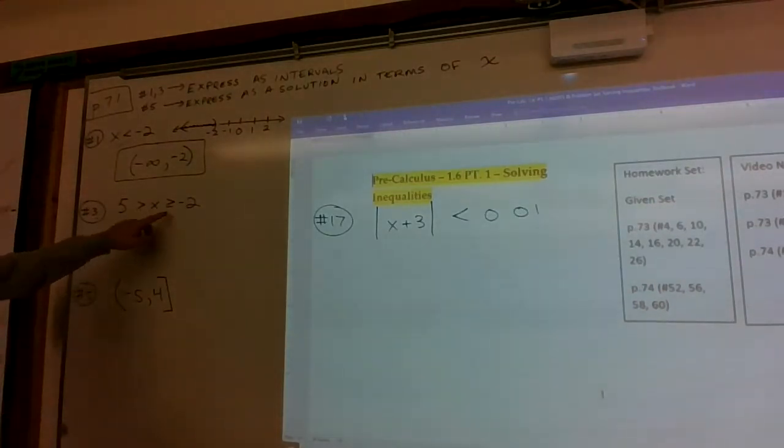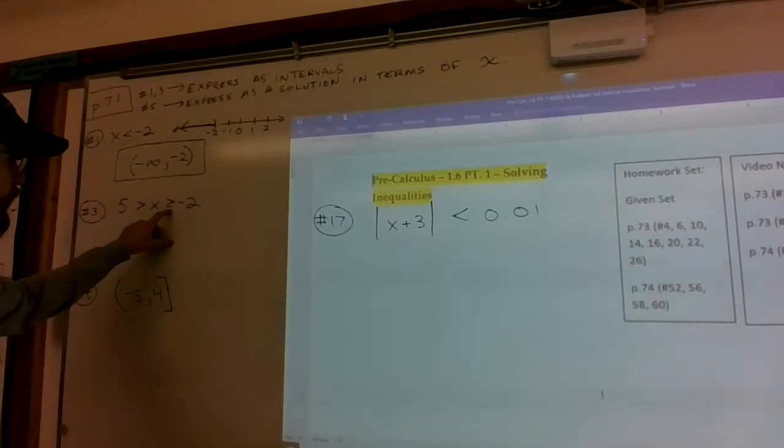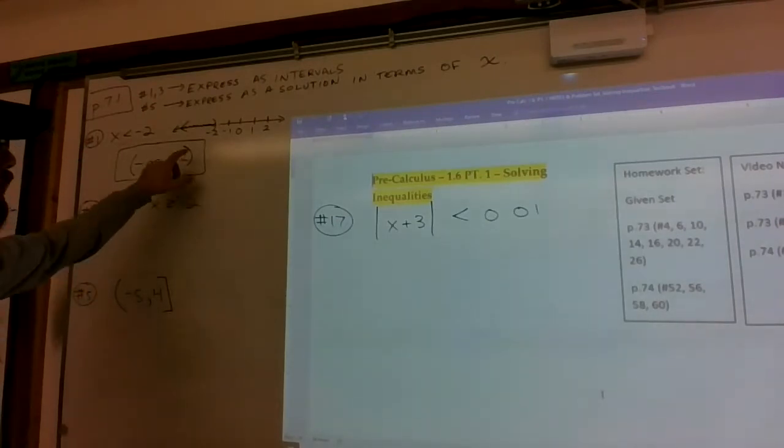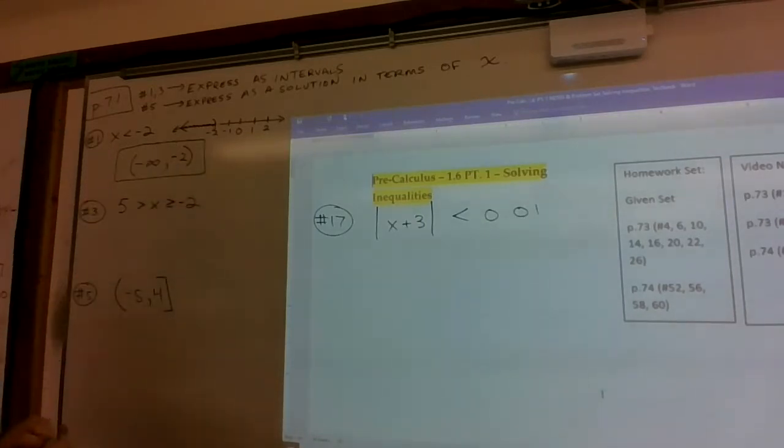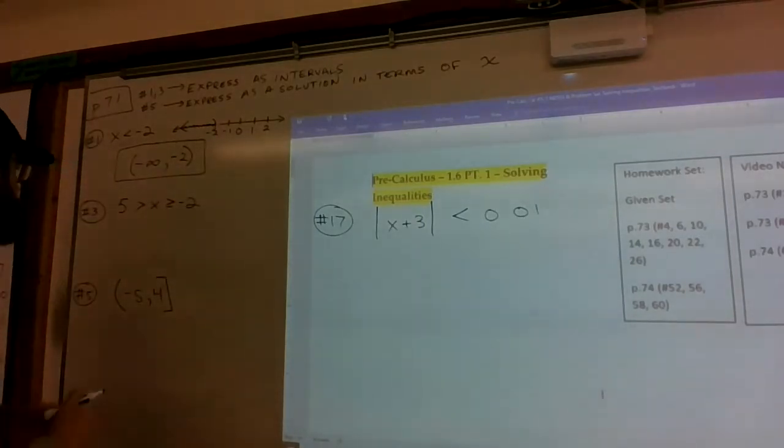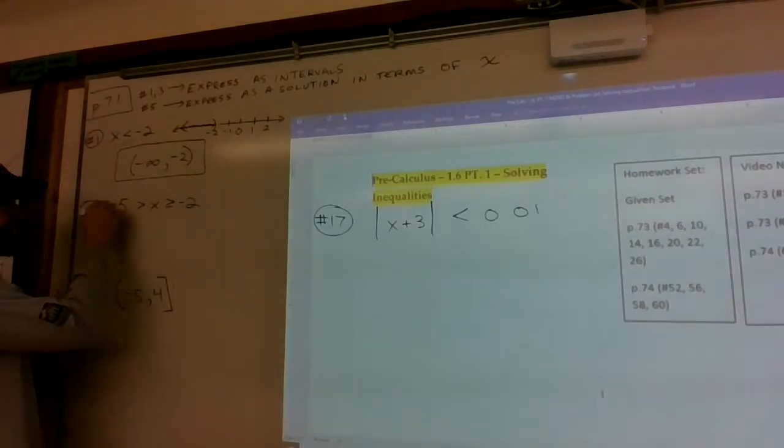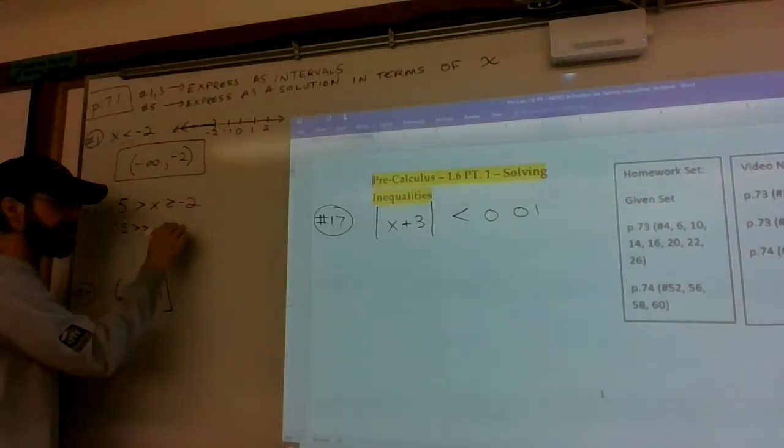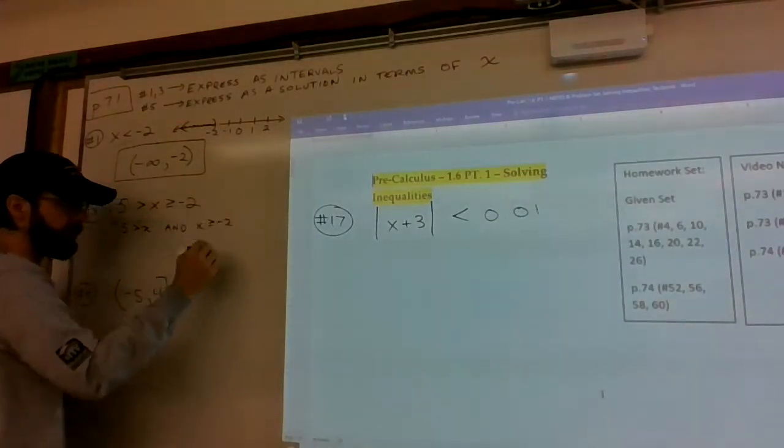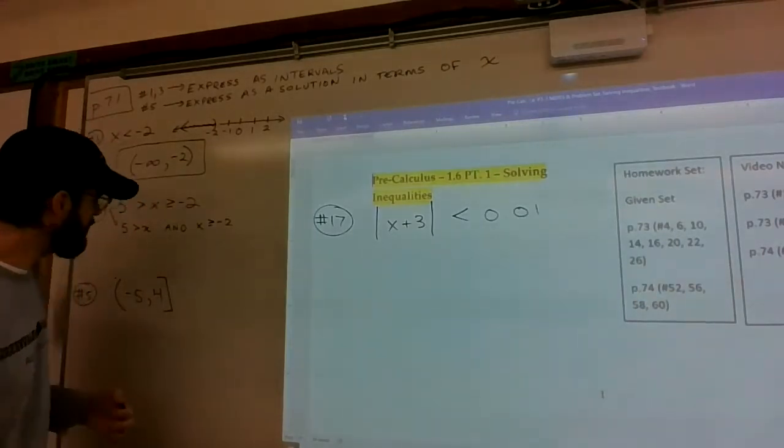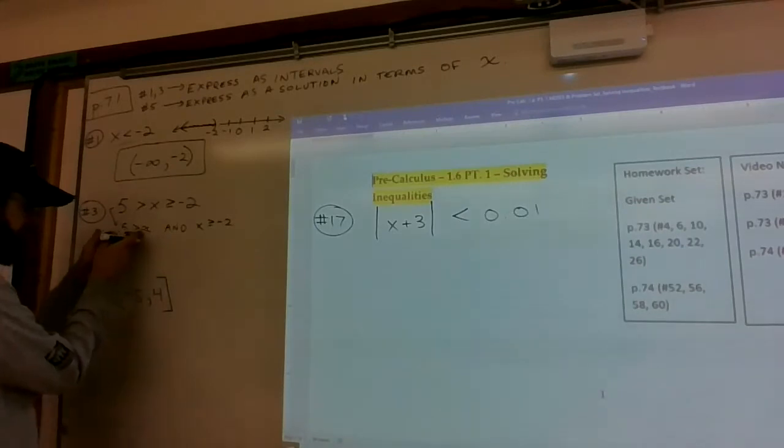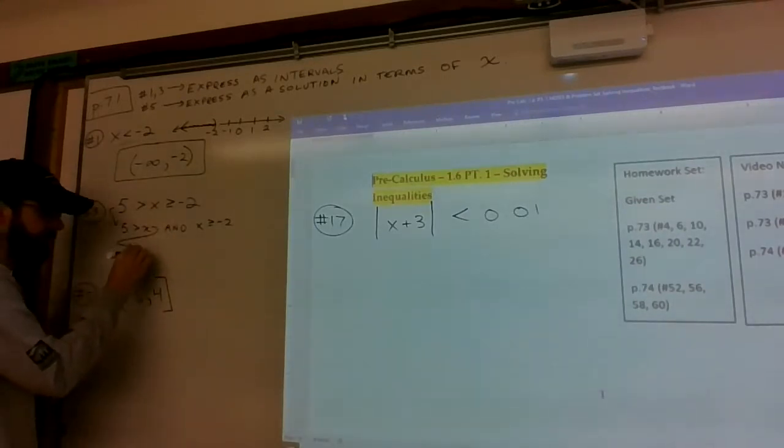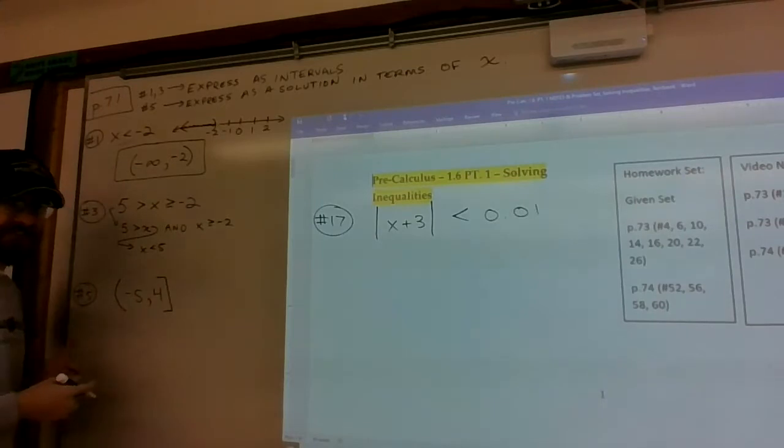On the next one, the inequality with an equal to creates a closed circle, which is a bracket instead of a parenthesis. You could split this up as 5 is greater than x and x is greater than or equal to negative 2, happening simultaneously. Then rewrite as x is smaller than 5.